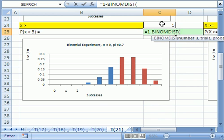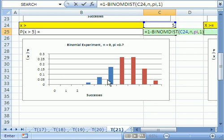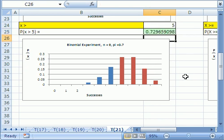Number of successes is five, because we want it to add zero, one, two, three, four, and five, and then subtract it from one. Comma. Our trials are n, comma. The probability is pi, comma, and the cumulative is one. Now, watch this. This part's going to add up all that, and then it's going to subtract it from one, which will give us the upper end. 0.729. So, the probability of getting greater than five houses with a large screen TV is that right there.